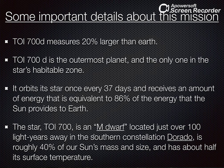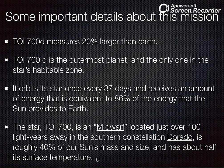That star TOI 700 is an M dwarf star — ye M dwarf star kya hota hai, ye hum thodi der mein dekhenge. And it is located just over 100 light years away in the southern constellation Dorado. Ye jo star hai, it is 40% of our sun's mass and size — jitna sun ka size hai uska 40% hai — and has about half its surface temperature. Jitna temperature sun ka hai usse aadha is star ka hai, aur ye 40% hai size mein.